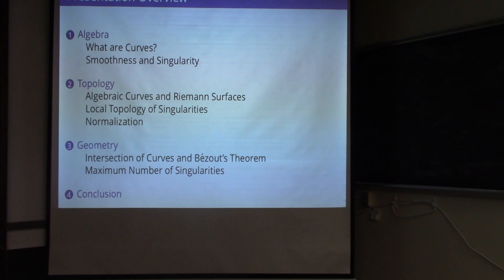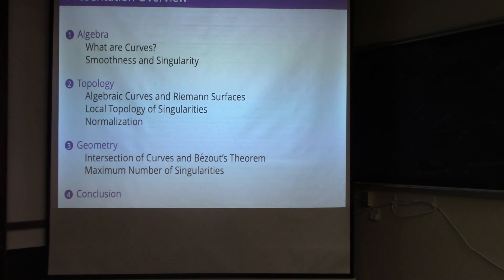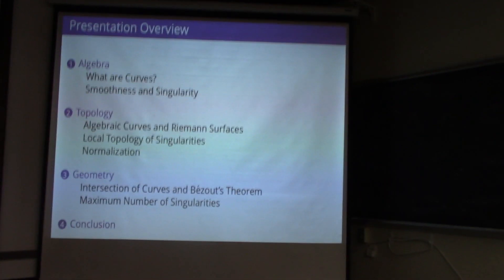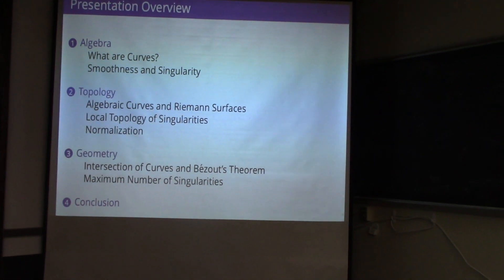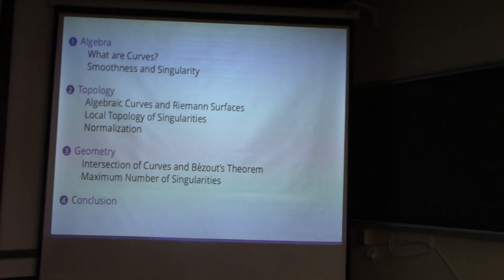I'll split my presentation into three parts. The first part is about the algebra, where I will establish some basic definitions. Then it's the topology, so now we have some pictures and we look at what a shape looks like. And then let's find some geometry — we look at the intersection of curves and talk about Bezout's theorem. And finally talk about something about the singularities of a curve and how that affects the geometry.